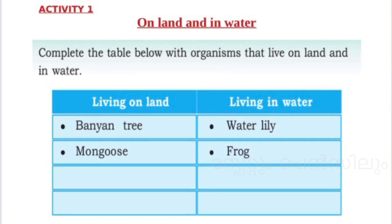We can write many names of plants, animals, and birds for living on land. For living in water: water lily, frog, crab, crocodile, fish, lotus.